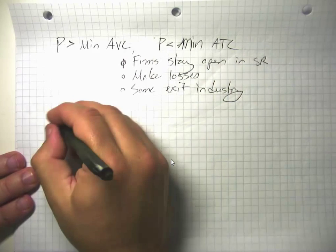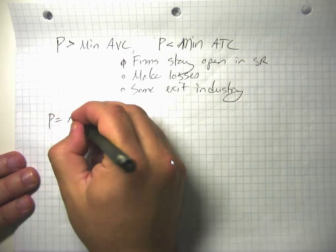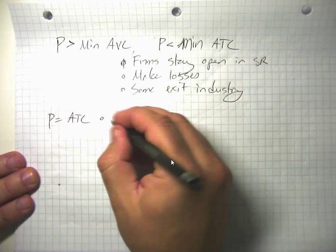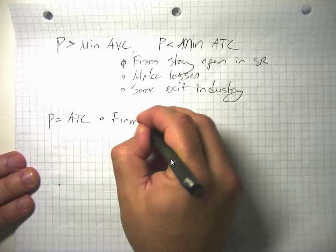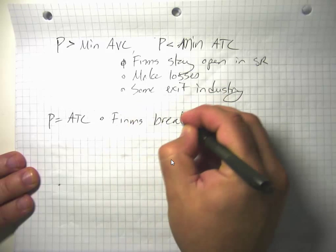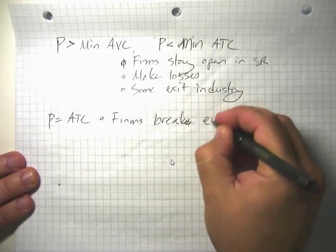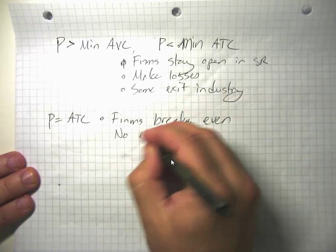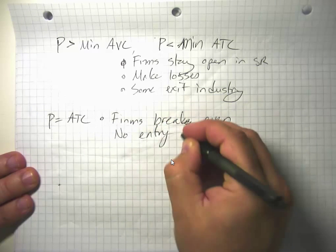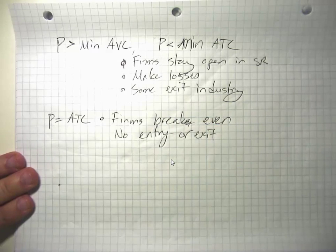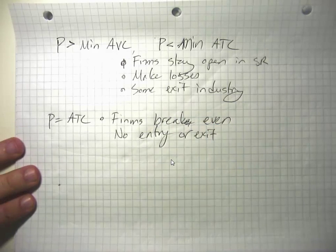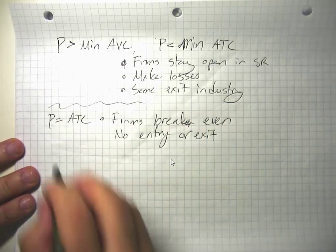If prices are equal to average total cost, then firms break even and there's no entry or exit, because firms are doing about as well in this industry as they could invest their capital in some other industry.